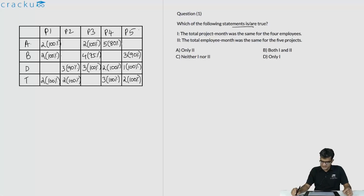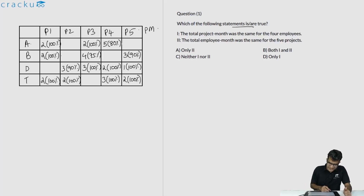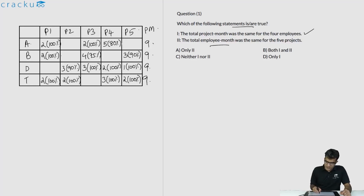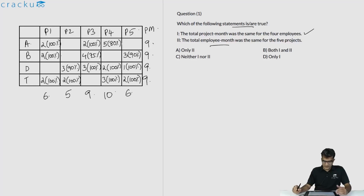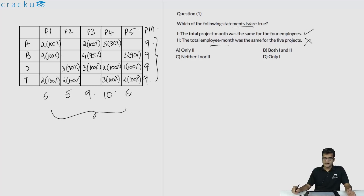We are given two statements. Statement 1: the total project months were the same for the four employees. Project month is the number of months each person worked. For A: 2+2+5 = 9. For B: 2+4+3 = 9. For D: 3+3+2+1 = 9. For T: 2+2+3+2 = 9. So statement 1 is correct. Statement 2: the total employee months were the same for each project. For P1: 2+2+2 = 6; P2: 3+2 = 5; P3: 2+4+3 = 9; P4: 5+2+3 = 10; P5: 3+1+2 = 6. The project months are the same for all employees but the employee months differ across projects. So statement 2 is not correct — the correct answer is only statement 1.